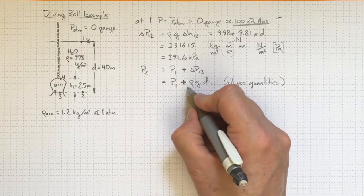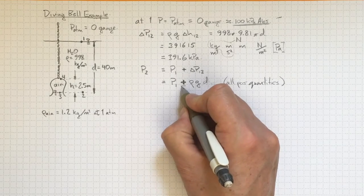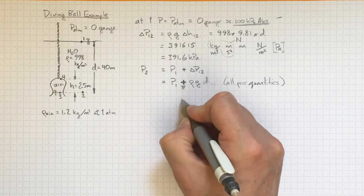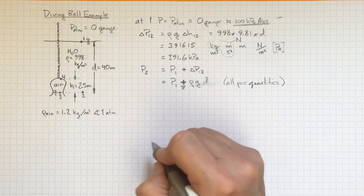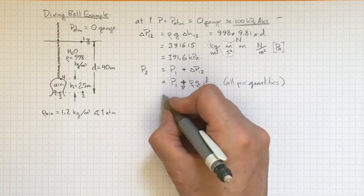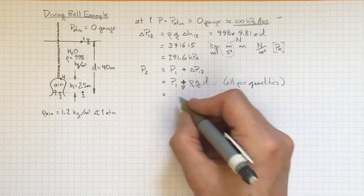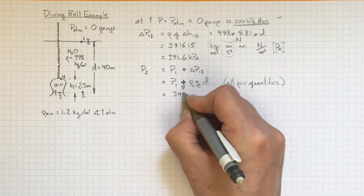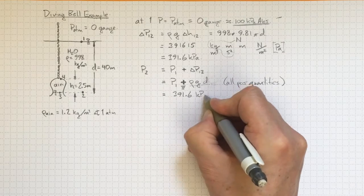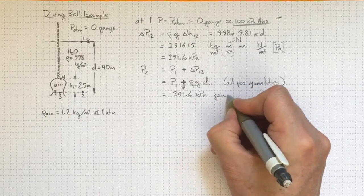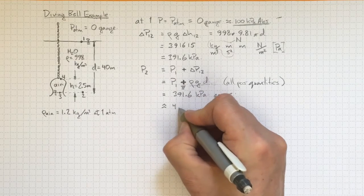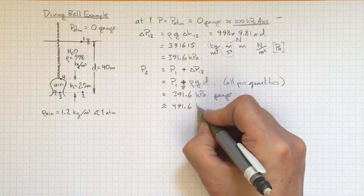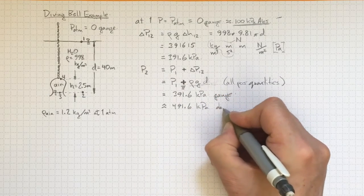My experience indicates you're much less likely to make mistakes if you go and check that sign, make all of these positive, check that sign and make sure that it works. And if I plug that in, I wind up with p2 equal to 391.6 kilopascals gauge, or about 491.6 kilopascals absolute.